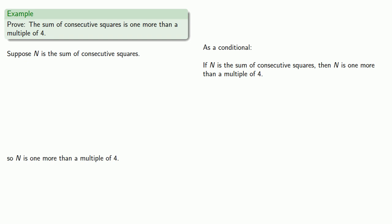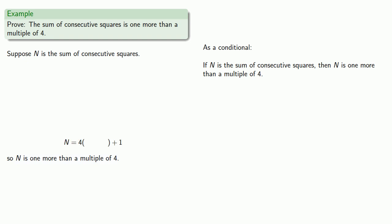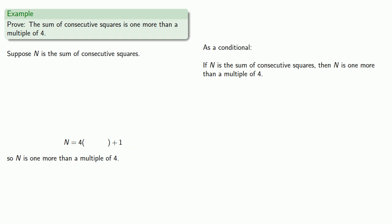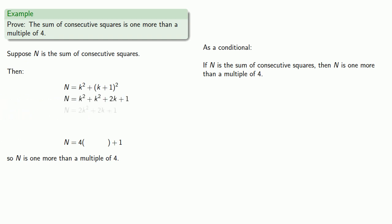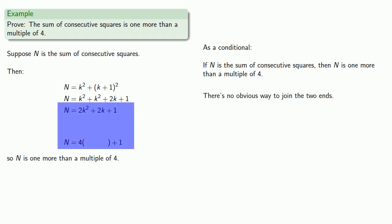Definitions are the whole of mathematics — all else is commentary. If we want to say that n is one more than a multiple of four, then we might say that n equals four times something plus one. And if n is the sum of consecutive squares, then n equals k² + (k+1)². We can do some algebra, and now we seem stuck — there's no obvious way to join the two expressions together.